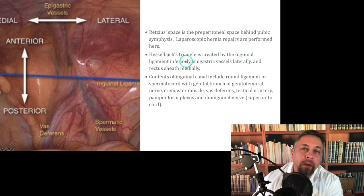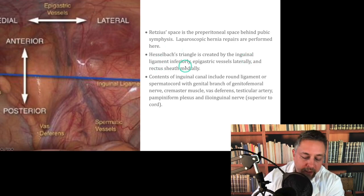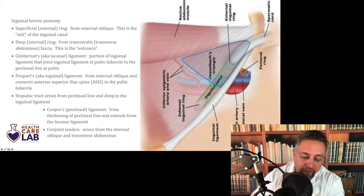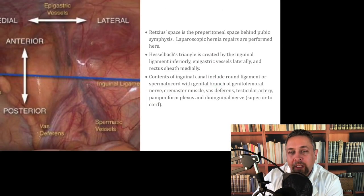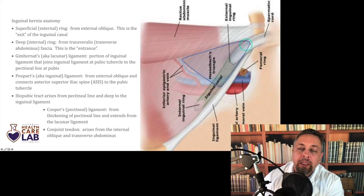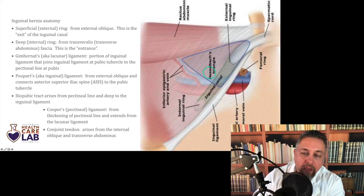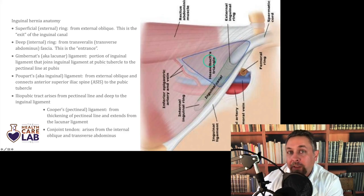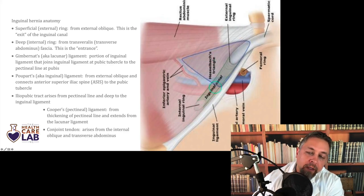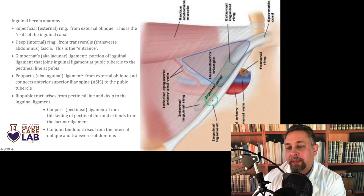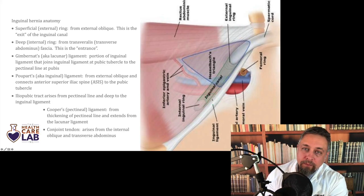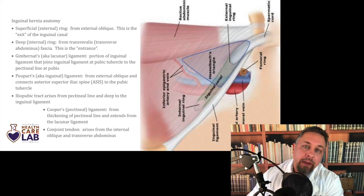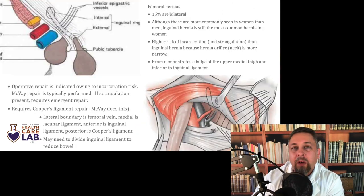Hesselbach's triangle is an important anatomic landmark created by the inguinal ligament inferiorly, the epigastric vessels laterally, and the rectus sheath medially. A direct hernia that goes through the floor of this area will have to go through Hesselbach's triangle. An indirect hernia actually doesn't go through Hesselbach's triangle — it squeezes down the inguinal canal and passes down along the inguinal ligament.